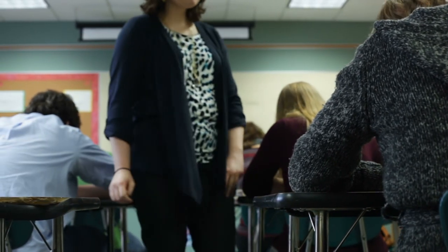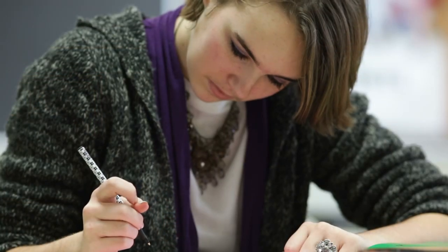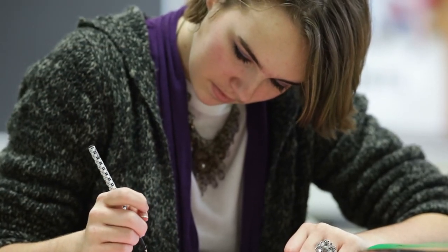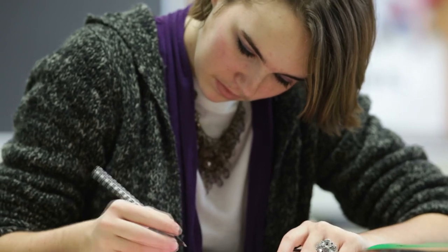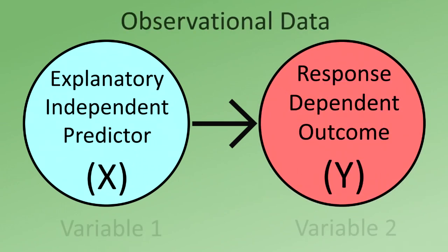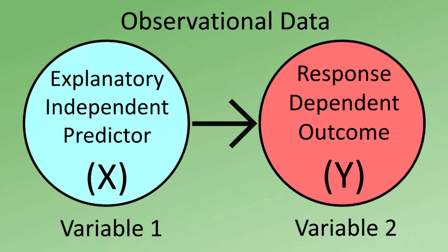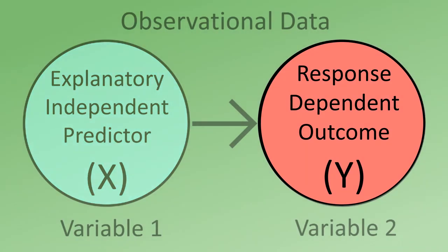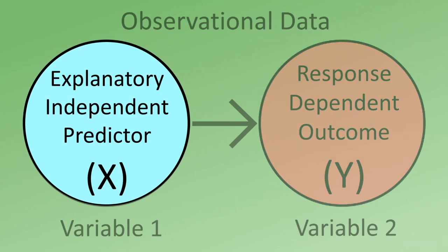Before we test our own association of interest with inferential statistics, we're going to work on visually describing that relationship. It's important to understand that when studying two variables, each variable has a role to play. That is, a variable may either be a response variable, also known as the dependent variable or outcome variable, or it could be the explanatory variable, also known as the independent variable or predictor variable.